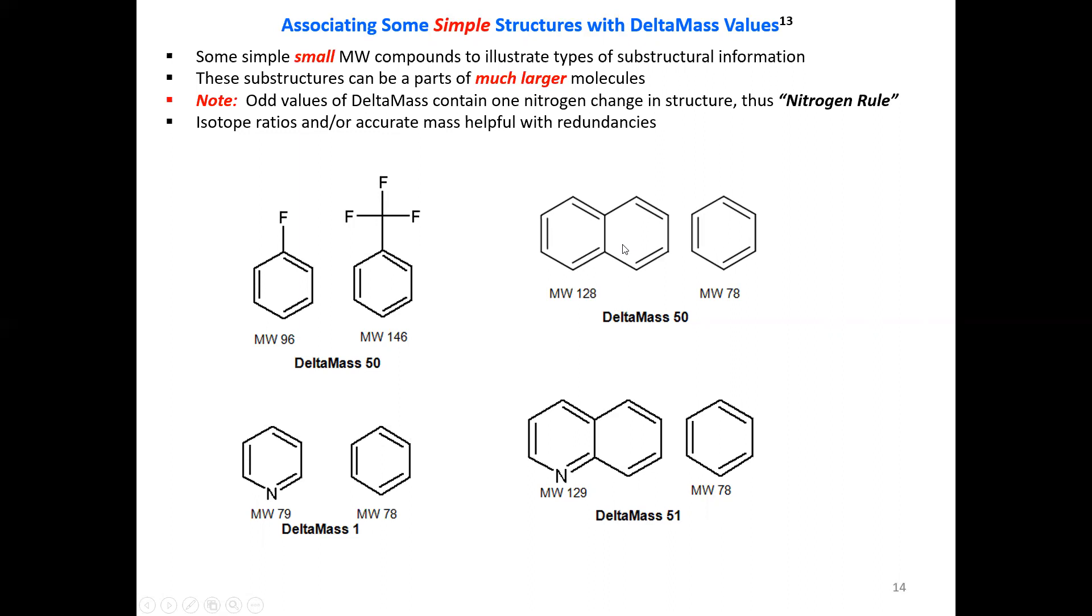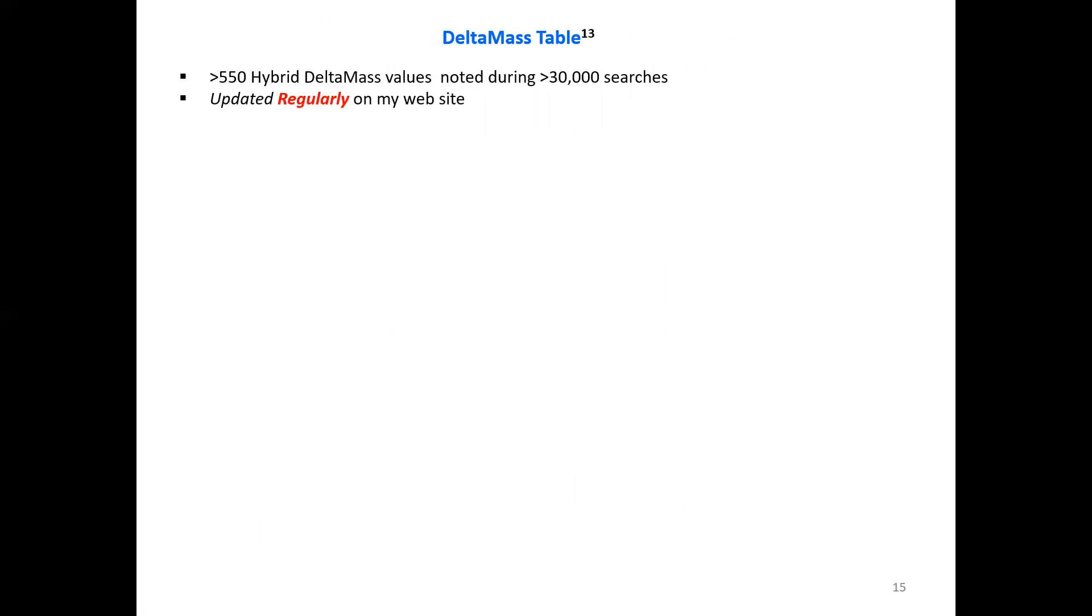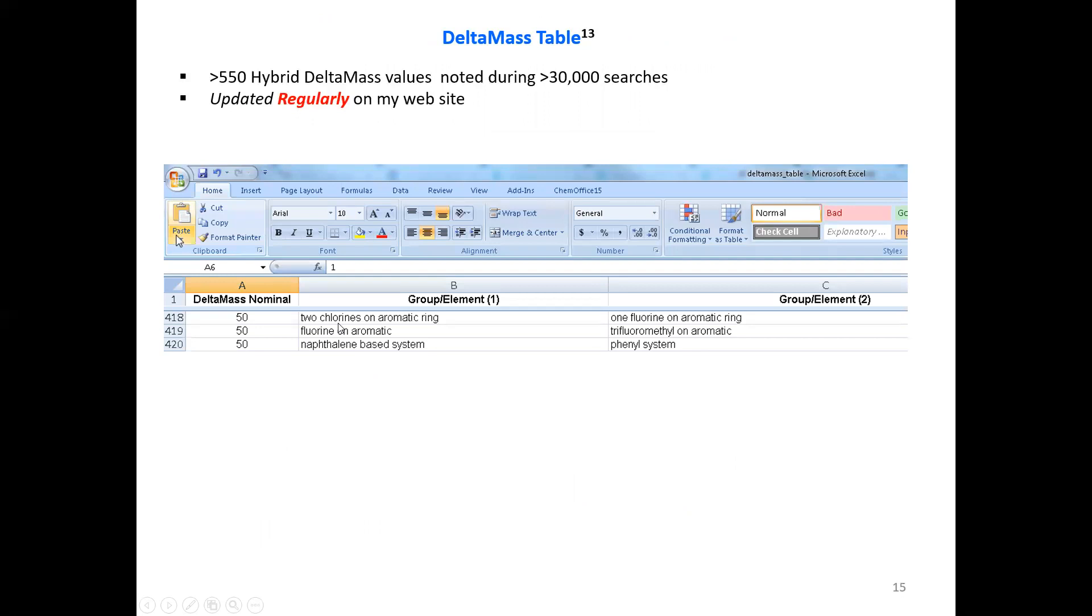And as I've talked before, these two show where the delta mass is odd. So that indicates that from going from one structure to another, the number of nitrogens has changed by one. So some delta masses are easy, some are not so easy. But while I was doing these 30,000 searches, I found over 550 hybrid delta mass values that I found very useful. And I update them regularly on my website. And they're in an Excel spreadsheet form. I hope this will be useful to you to have this delta mass table for some of the more unusual ones.